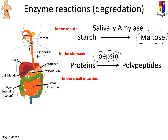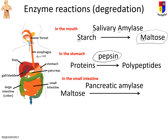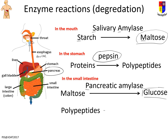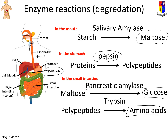At this point we've broken down starch into maltose and proteins into polypeptides, and everything empties into the small intestine — where most of the work is done, finishing digestion and absorbing nutrients. Maltose is broken down further by pancreatic amylase (from the pancreas) into glucose, which is ready to use. Polypeptides are broken down again by trypsin into amino acids, the final product from proteins.